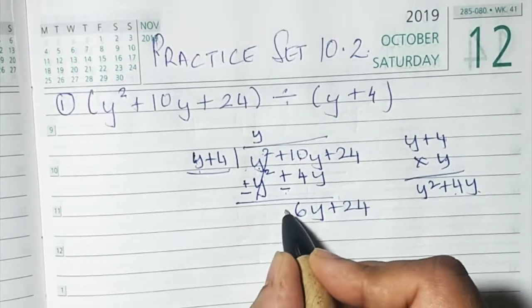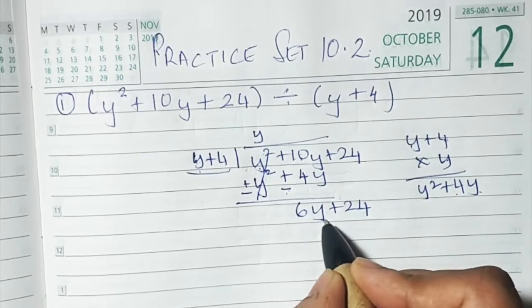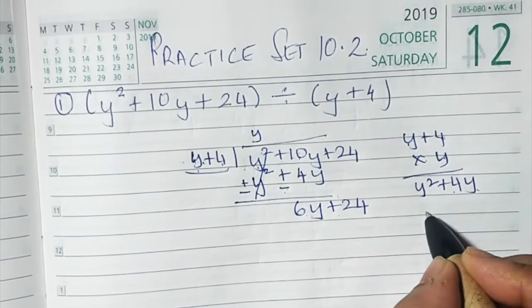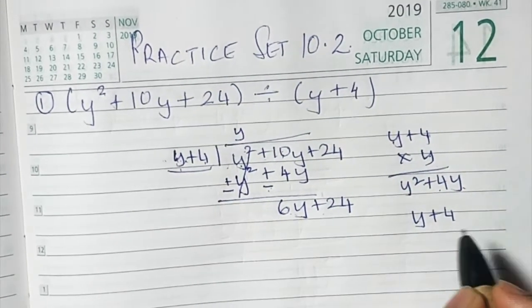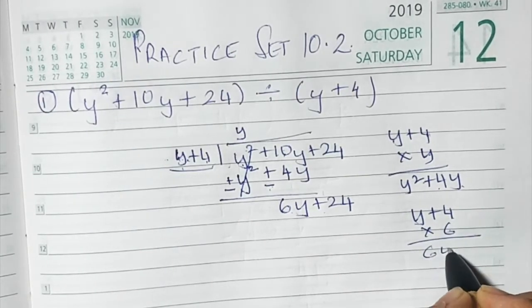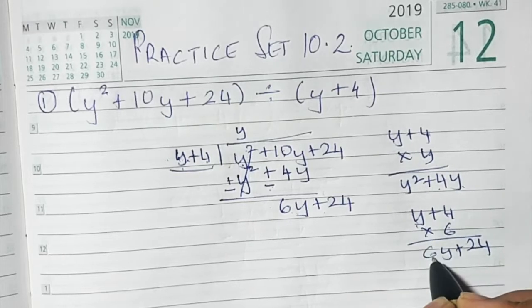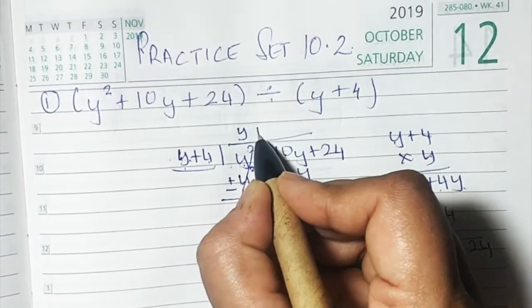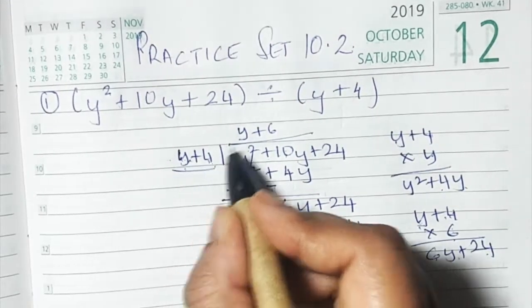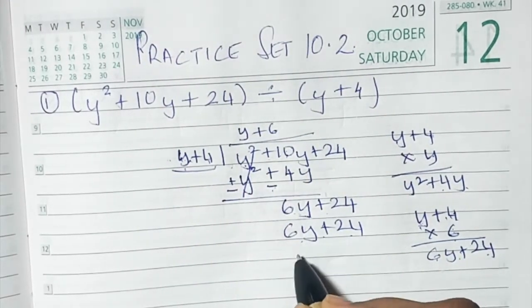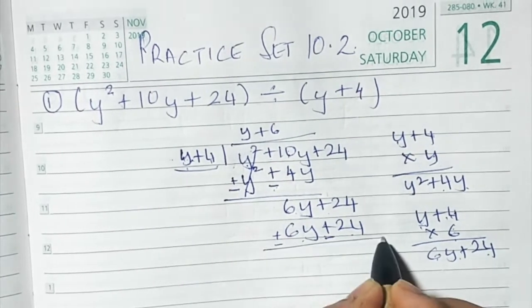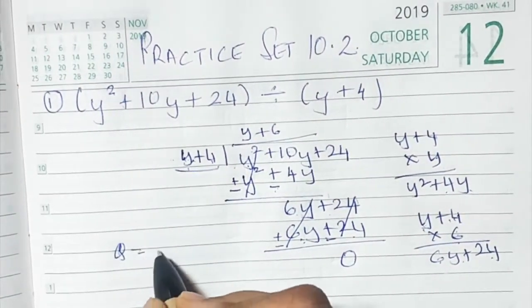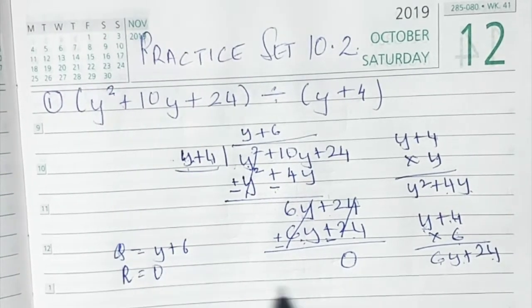We now have 6y + 24. The divisor is y + 4. Since 6 is the difference, we multiply y + 4 by 6: 6 × y = 6y, and 6 × 4 = 24, giving 6y + 24. Change the signs to minus; both terms cancel. The answer is remainder 0, so the quotient q is y + 6 and remainder r is 0.